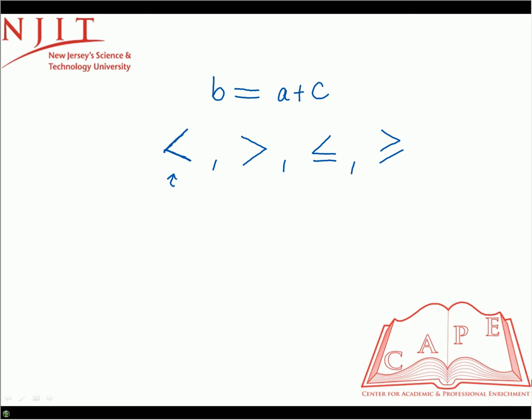For the first symbol, some number is smaller than another number. For the second symbol, the point is pointing to the right, so the number on the left is greater than the number on the right. For the third symbol, the number on the left can be either smaller than or equal to the number on the right. And for the last symbol, the number on the left can be greater than or equal to the number on the right.